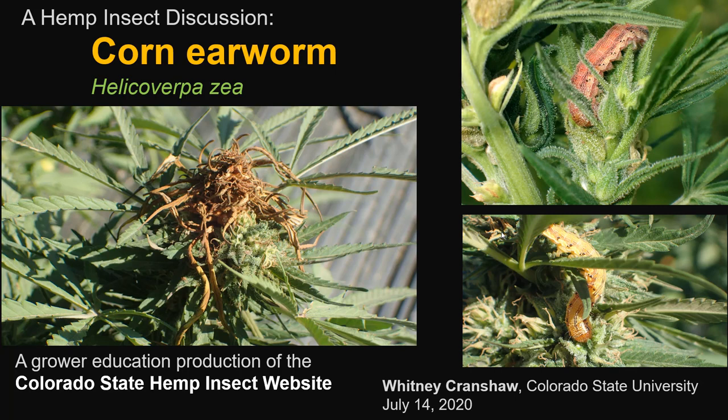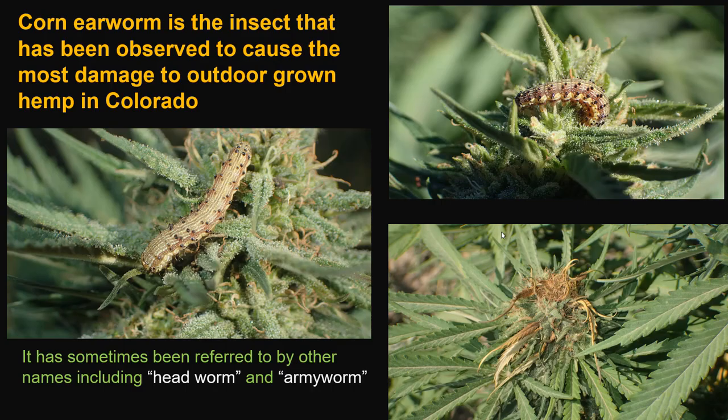In this modern era of hemp production in the United States, we're learning a lot about all phases of the crop. The one section I would like to help address is what's showing up in terms of insect issues. A great many things have been found associated with hemp in the United States in the last few years. Some are important, some are not. But the most important one is an insect called the corn earworm, at least in our state, Colorado.